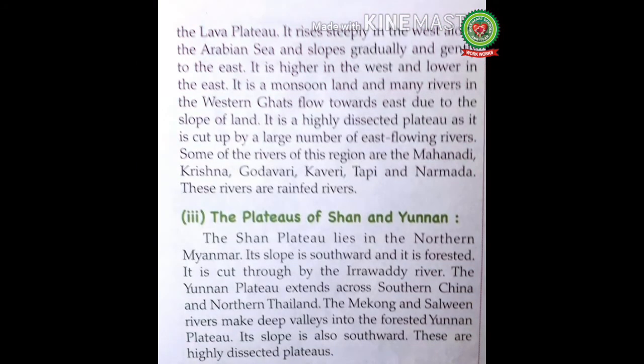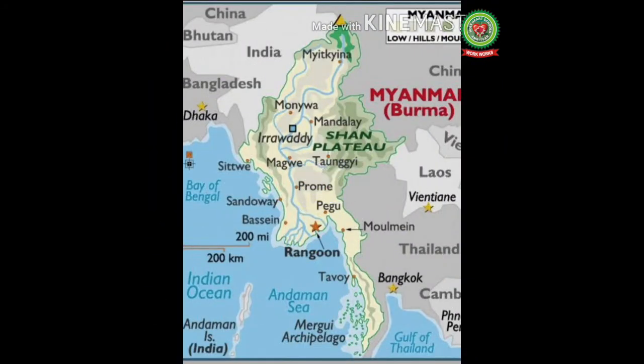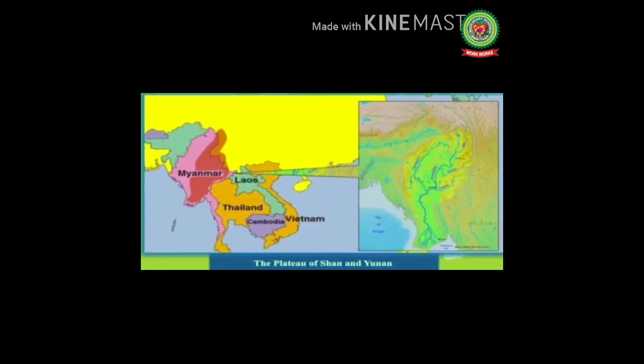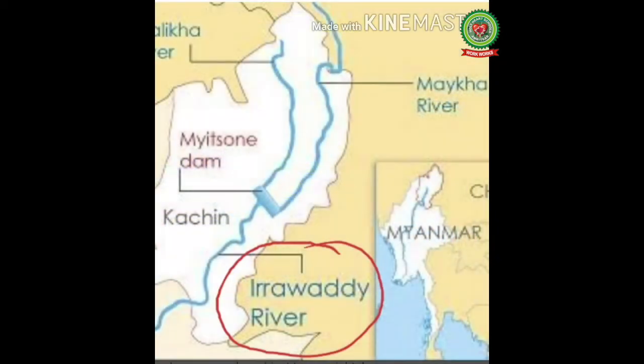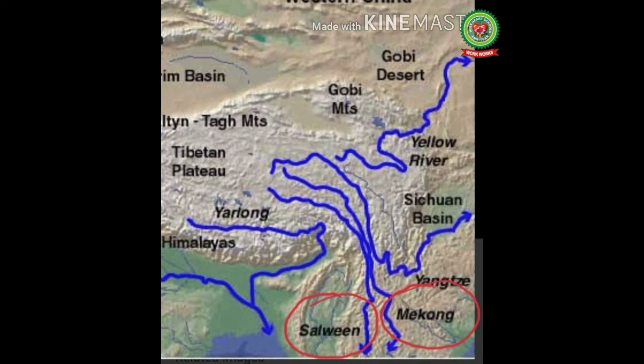The Plateaus of Shan and Yunnan: the Shan Plateau lies in northern Myanmar. Its slope is southward and it is forested, cut through by the Irrawaddy River. The Yunnan Plateau extends across southern China and northern Thailand. The Mekong and Salween rivers make deep valleys into the forested Yunnan Plateau, whose slope is also southward. These are highly dissected plateaus.